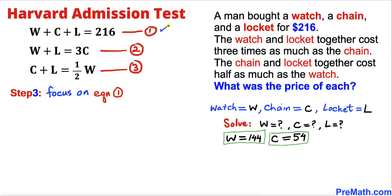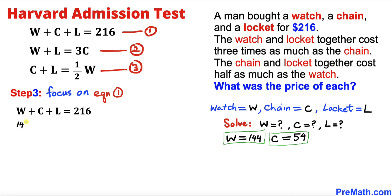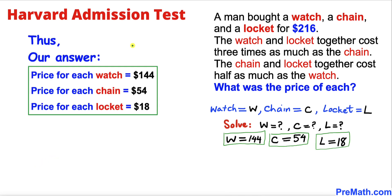For the final step, we return to equation 1. With W = 144 and C = 54, we write 144 + 54 + L = 216. Subtracting 198 from both sides, L = 18. So the final answers are: the watch costs 144 dollars, the chain costs 54 dollars, and the locket costs 18 dollars. Thanks for watching and please subscribe for more exciting videos.